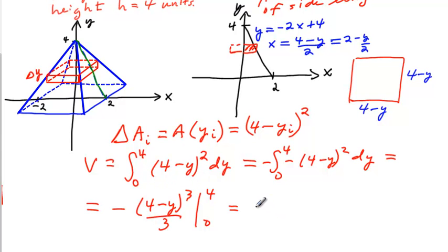Okay, so let's see, we end up with a negative, putting 4 in there. We get 0 minus a negative. So that becomes plus 4 to the third over 3. And it ends up simplifying to 64 thirds cubic units.